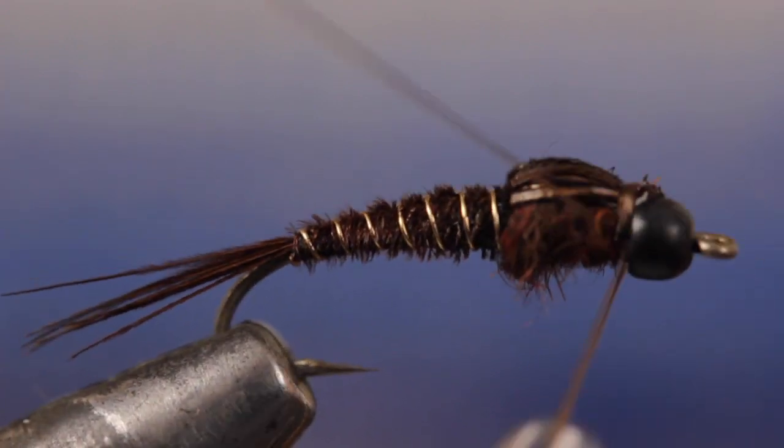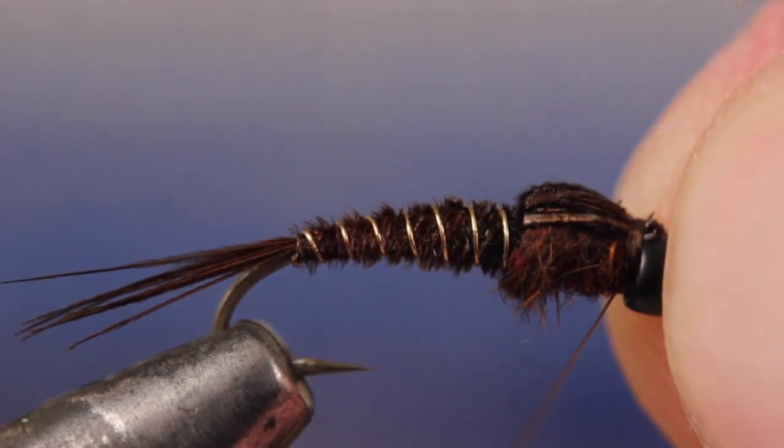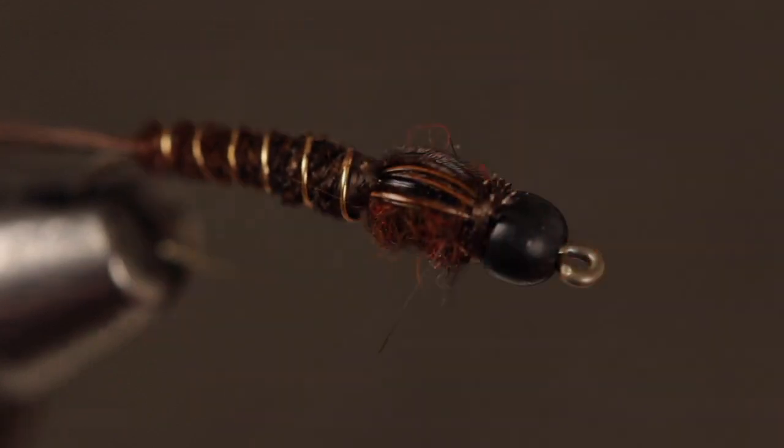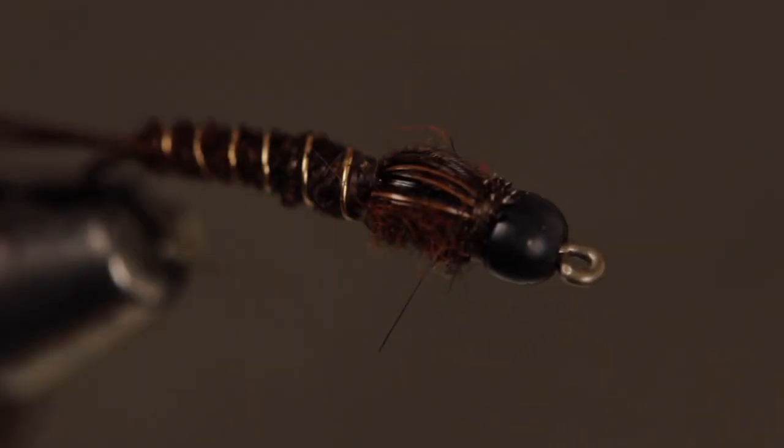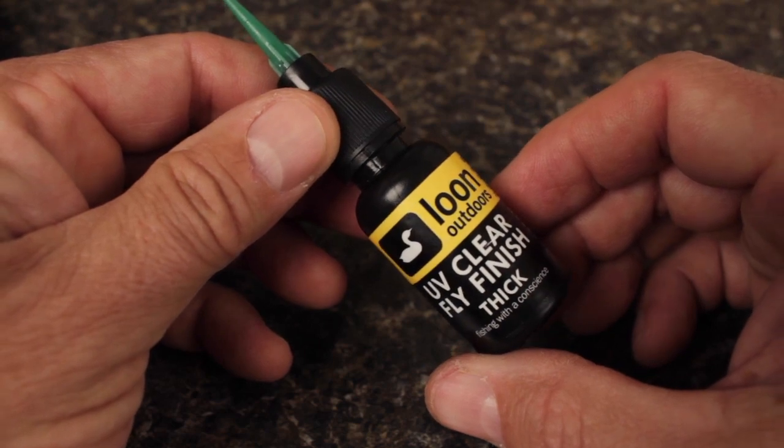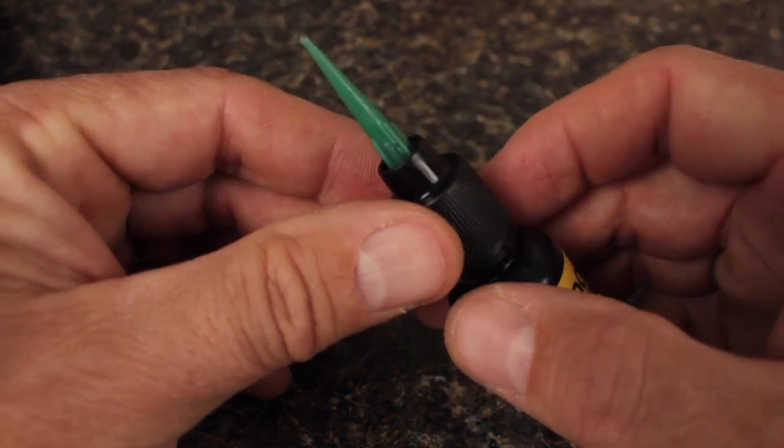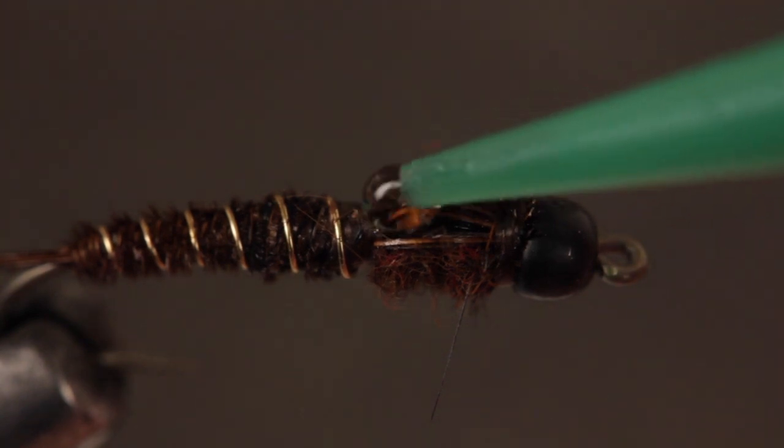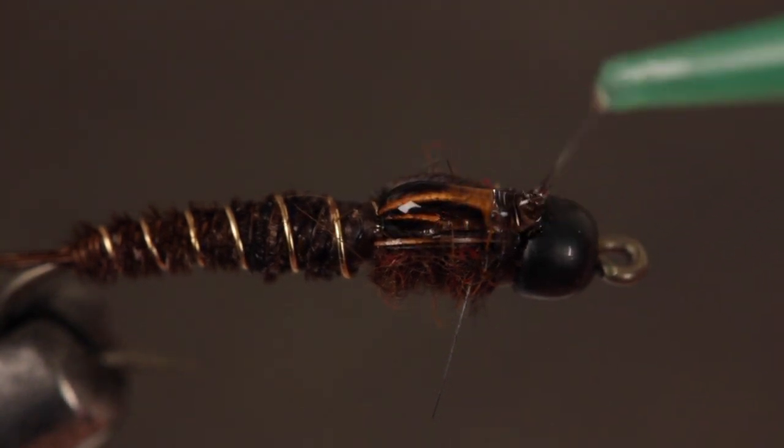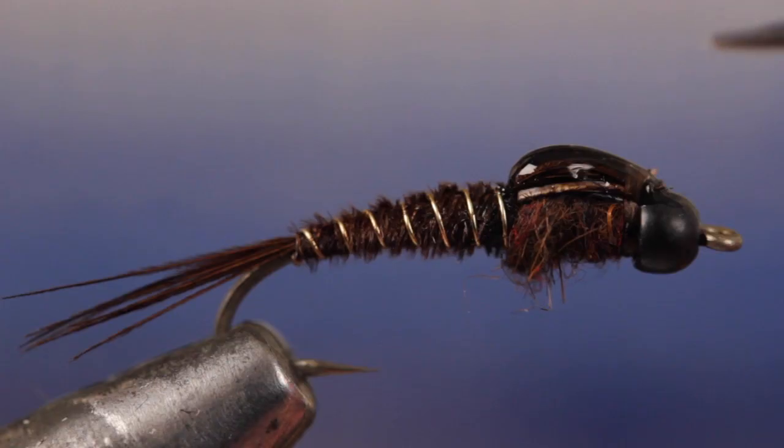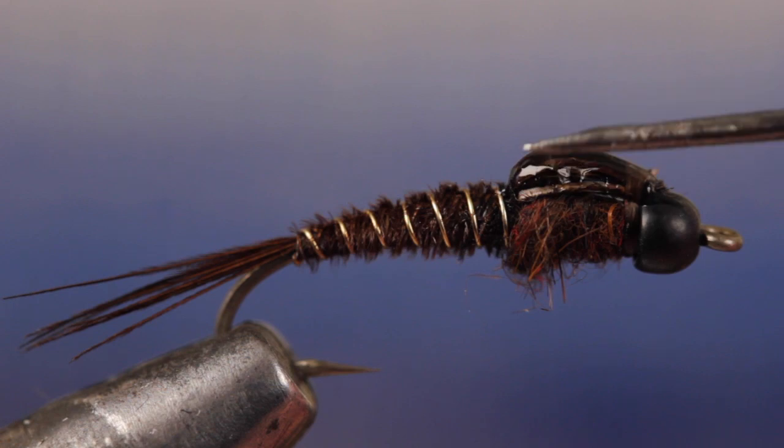Do a five or six turn whip finish to secure your tying thread and then snip or cut it off close. At this point you could apply head cement to the wing case and wraps but I found a coating of thick UV resin looks and performs much better. You don't need much, just enough to coat the wing case, the top of the thread wraps and out onto the bead. A bodkin can be used to ensure complete coverage.